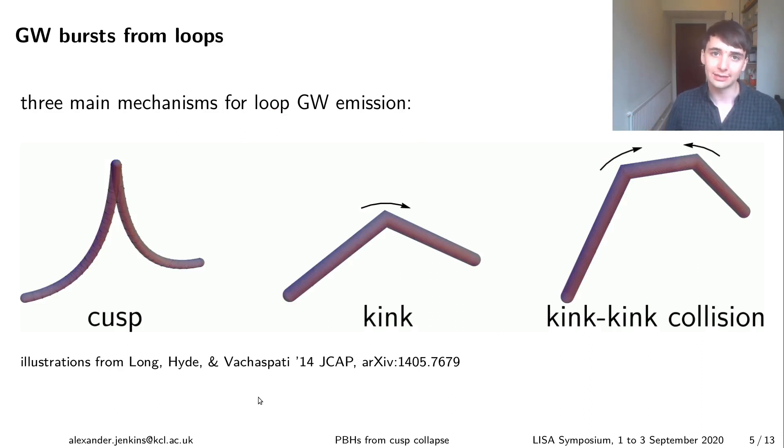So there are three main ways in which loops emit gravitational waves. You can form cusps which are points on the loop which move instantaneously at the speed of light in a kind of whip crack motion and they emit a very strong beam of gravitational waves in a particular direction. You can get these discontinuities called kinks which propagate around the loop at the speed of light, beaming out gravitational waves like a lighthouse. And if you have two kinks traveling in opposite directions which collide with each other then this can also emit a burst of gravitational waves.